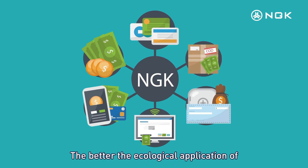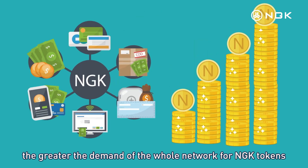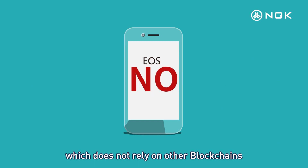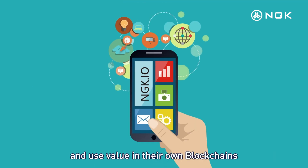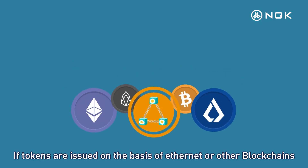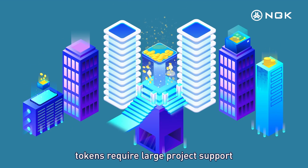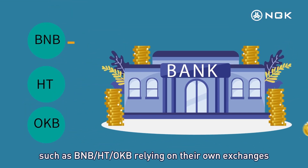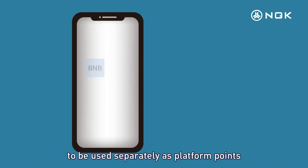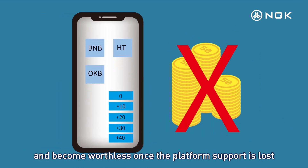The better the blockchain's ecological applications develop, the greater the network's demand for NGK tokens. NGK does not rely on other blockchains, meaning NGK tokens have practical significance and use value within their own blockchain. In contrast, tokens issued on Ethereum or other blockchains require large external project support — such as BNB, HT, and OKB relying on their own exchanges.